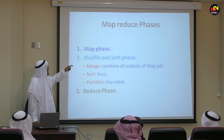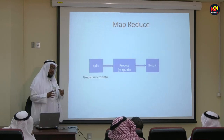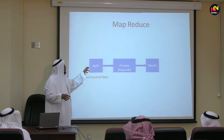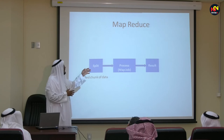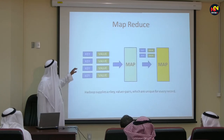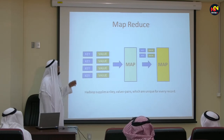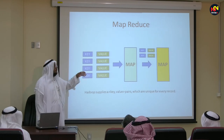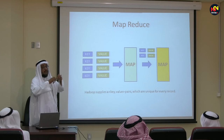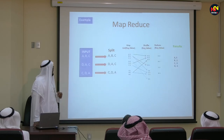You have the map phase, the shuffle and sort phase, and the reduce phase. Basically you split the data into chunks of small data called splits, and process them with map jobs to get results. You get the data as key-value pairs, then reduce the map-reduce output to key-value pairs, collect all the data, shuffle and sort it, and get the final result.